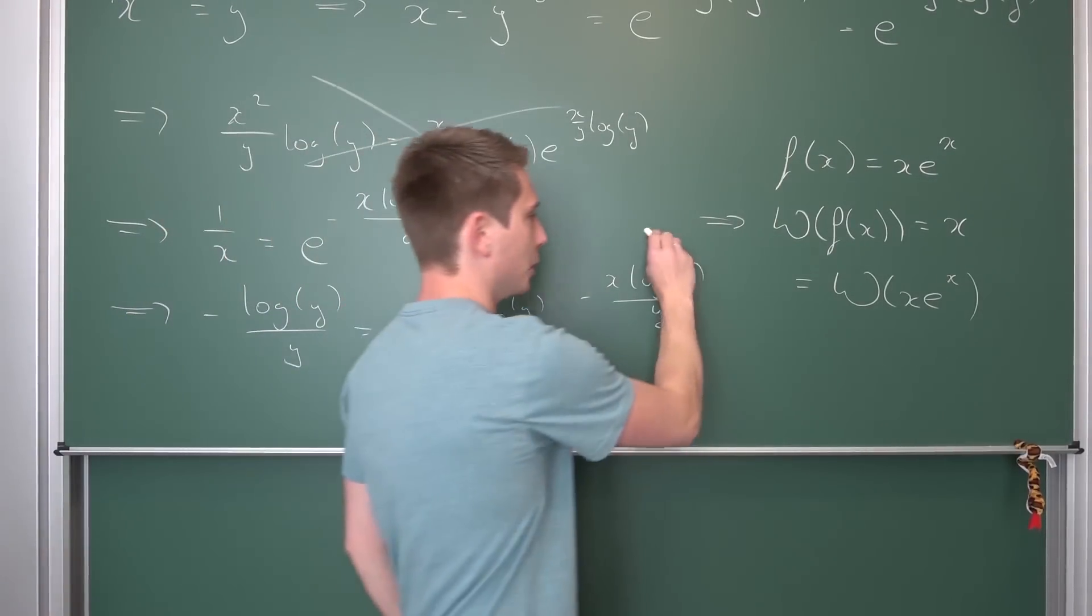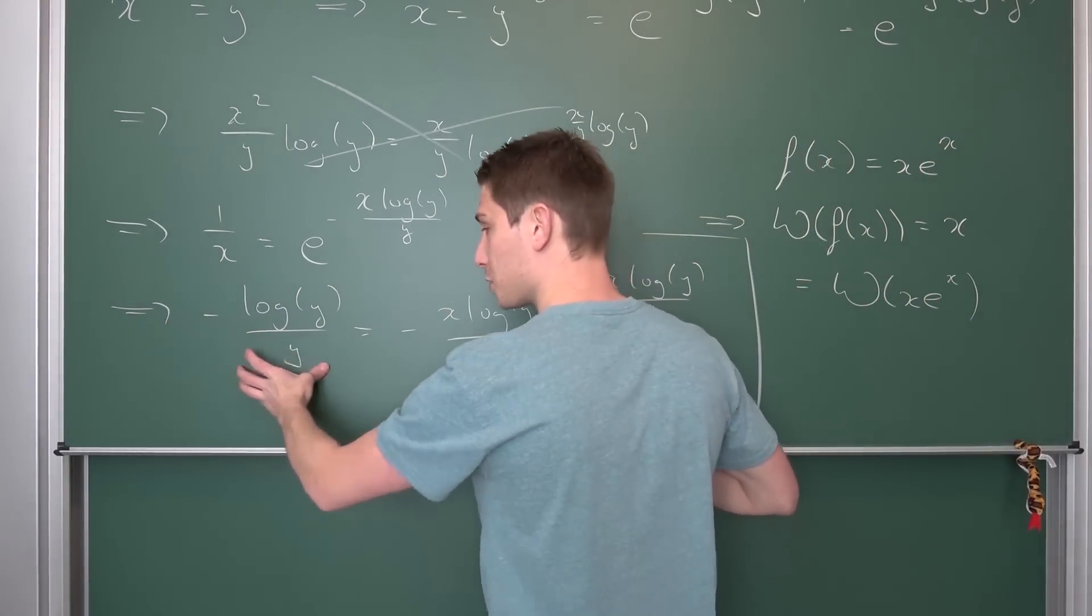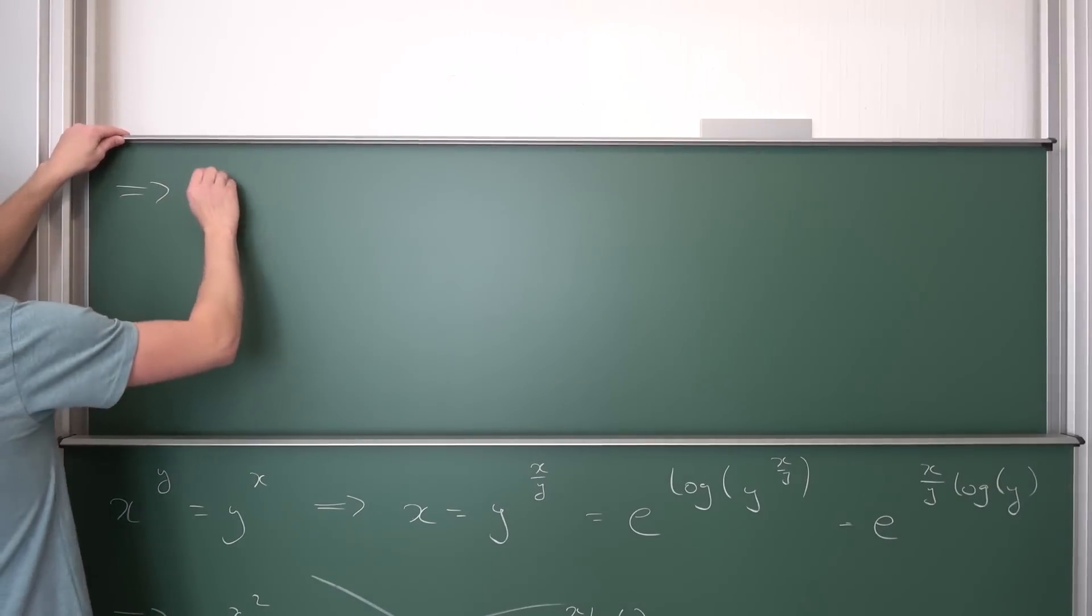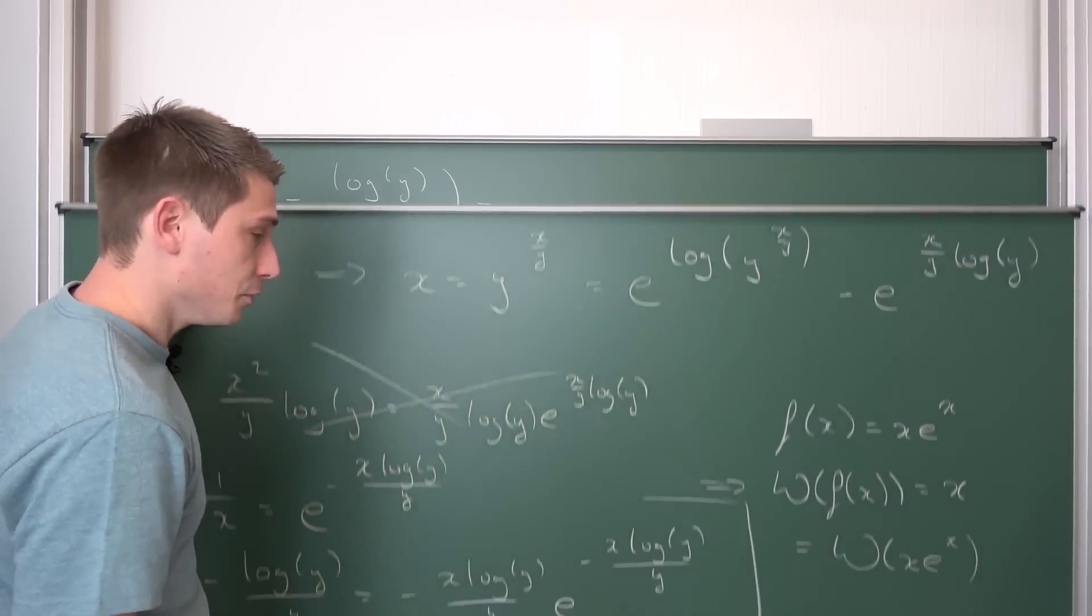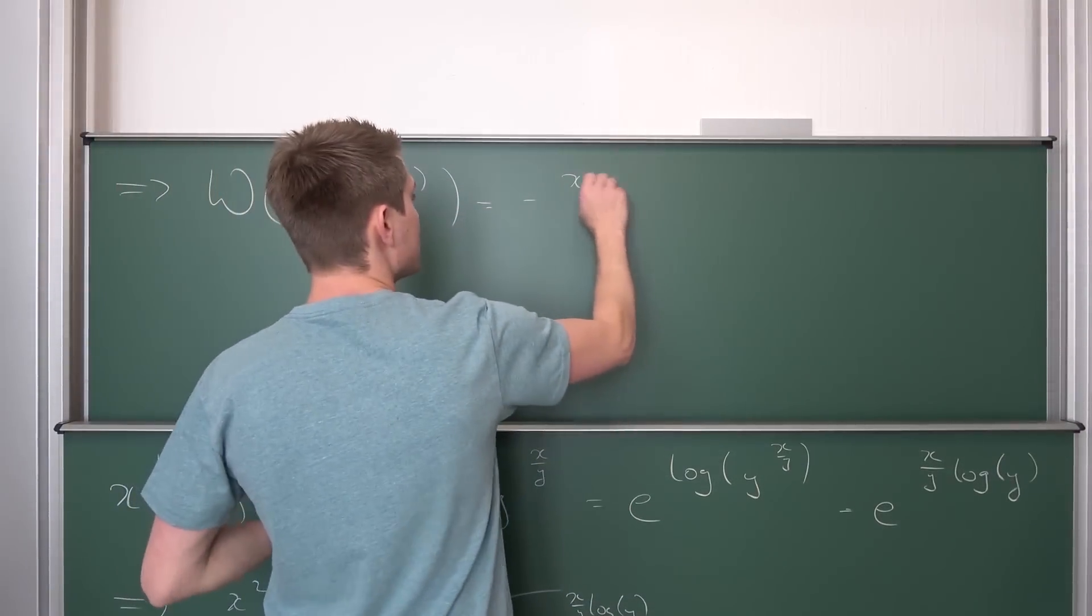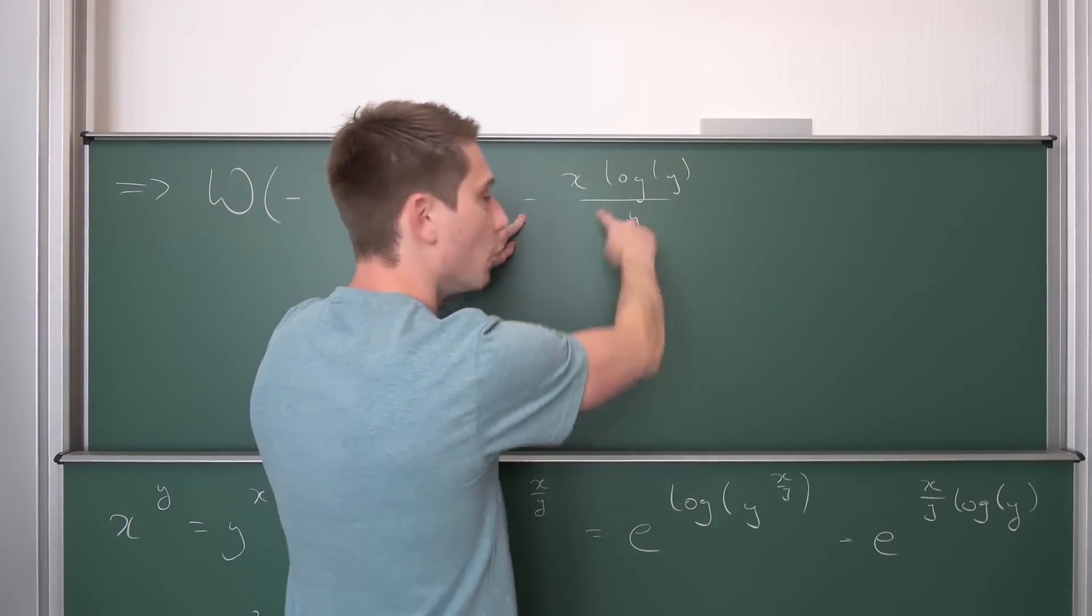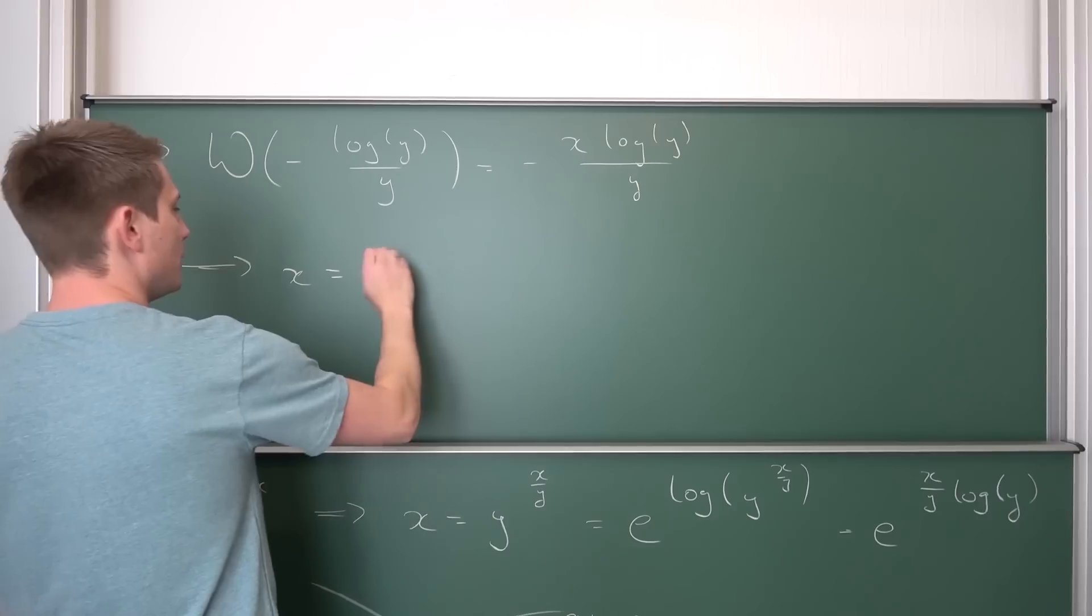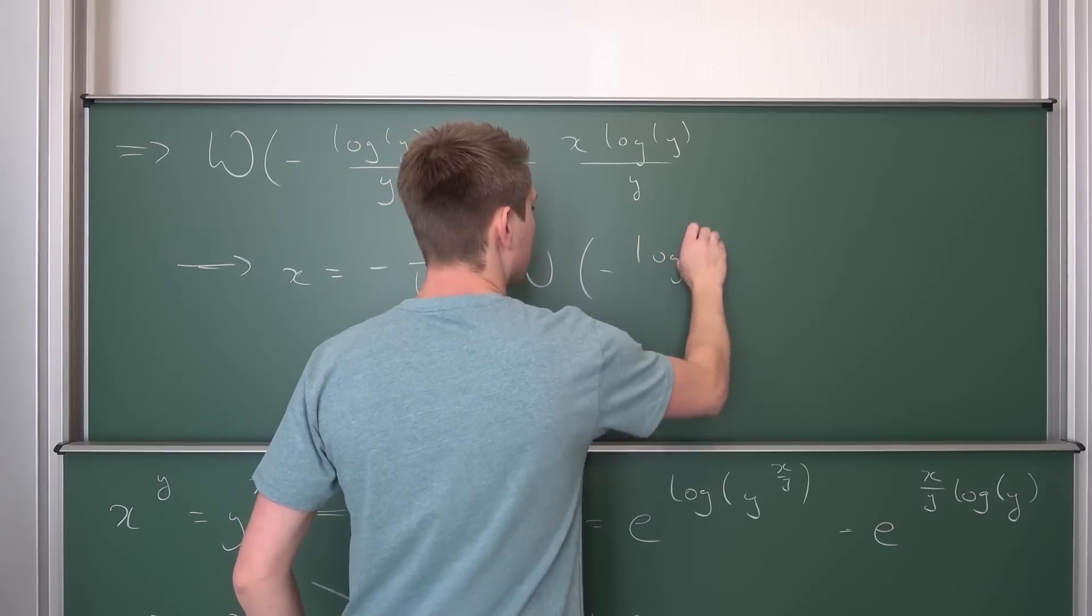And here is where Lambert W boy comes in. Finally, freaking finally, my boys and girls out there. We are going to apply it to both sides. Then we are going to get Lambert W of this chunk. It's just something you have to evaluate numerically. Applying Lambert W is going to give us Lambert W of negative log of y over y being equal to, the solution to this thing is going to be negative x times log of y over y. And now we can multiply both sides by negative y over log of y to just separate for x.